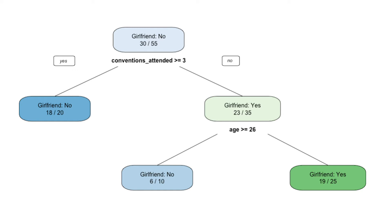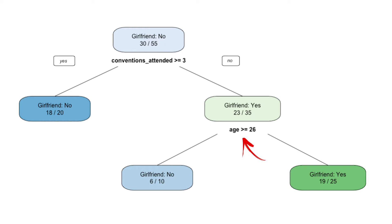The first branching point in the decision tree is whether you have attended three or more Comic-Con conventions. If you have, the model predicts you have no girlfriend — 18 out of 20 people who attended three or more conventions were correctly classified as having no girlfriend. On the other hand, 35 people attended fewer than three conventions; of those, 23 had a girlfriend. Adding the variable age — if you're 26 or older, 10 of those 35 people are classified as having no girlfriend, correctly 6 out of 10 times. For those younger than 26, we classify that they do have a girlfriend, correct 19 out of 25 times.